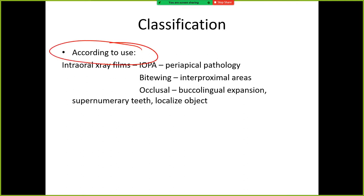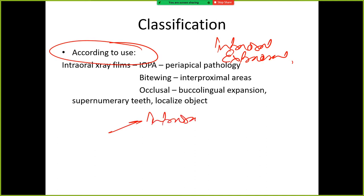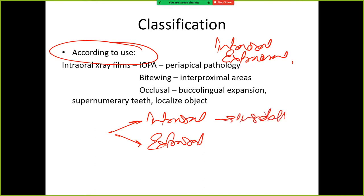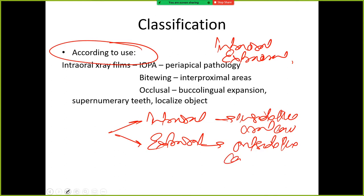X-ray films can be classified according to use. They can be either intraoral or extraoral. Intraoral means inside the oral cavity, and extraoral means outside the oral cavity. Can you give me some examples of intraoral radiographs?